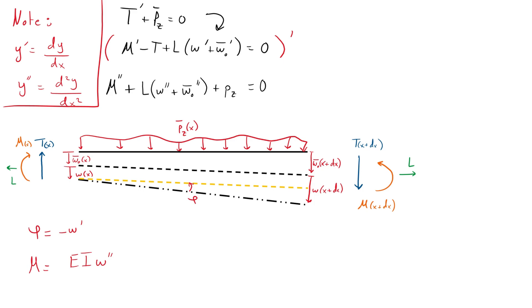Because our positive sign convention is counterclockwise, the rotation phi is negative the change of deflection along x. And for the same reason, we need a minus sign for the bending moment as well. This allows us to substitute the moment term into the differential equation to develop a governing differential equation of a beam column.